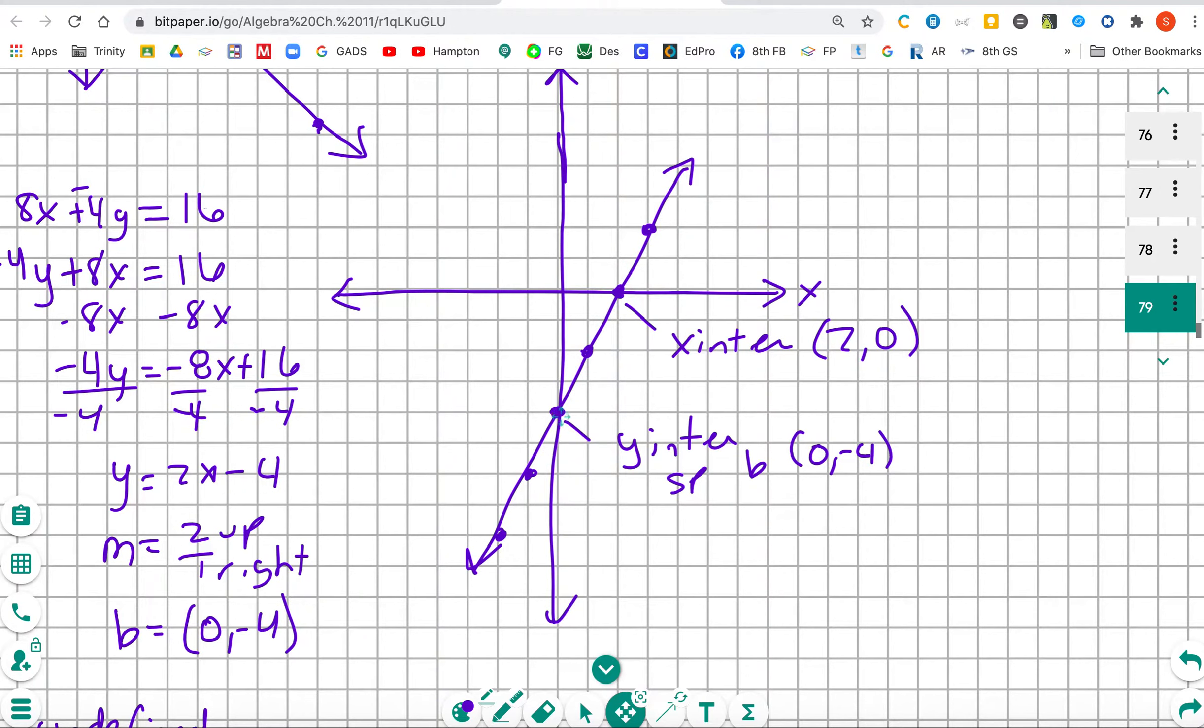Go back to the starting point, down 2 to the left 1, down 2 to the left 1. Now we're going to label both intercepts. This one is our y-intercept, our starting point, our b, our (0, -4). This is our x-intercept (2, 0). We're moving on to number 13.